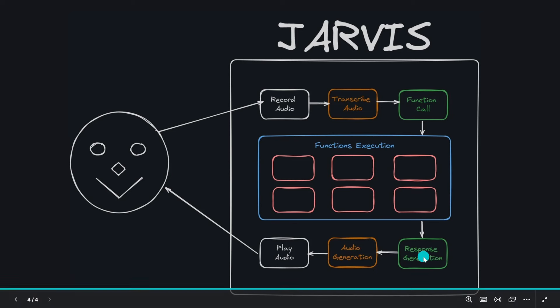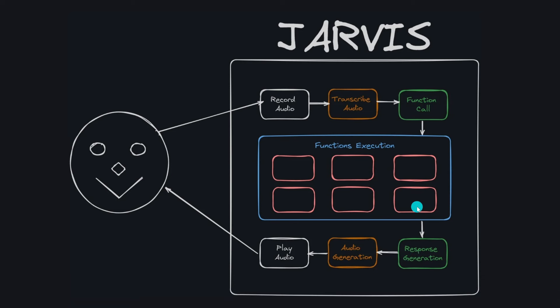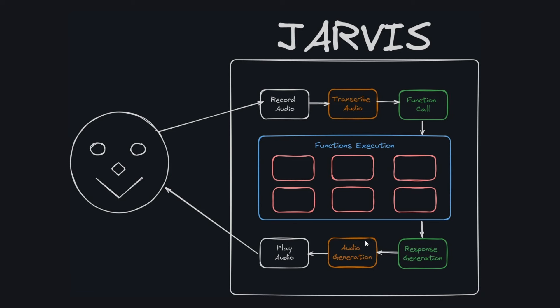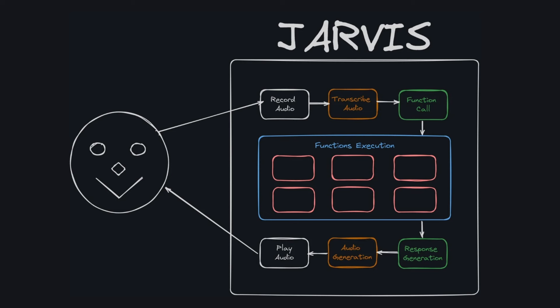After executing the right tools, the LLM generates a response based on the function's output as well as the user's input. Finally, the generated response is converted into audio and played back to the user. Now we've broken down the components involved, but it's time to go one step further and understand what is going on behind each component and how you can create this architecture to bring it to life. Stay tuned because by the end of this video, you'll see just how powerful and accessible creating your own personal assistant Jarvis can be.